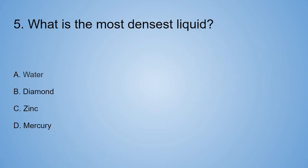Number 5. What is the most densest liquid? A. Water. B. Diamond. C. Zinc. D. Mercury. I think it's either A, C, or D because diamond is not a liquid. But anyways, let's see the answer.